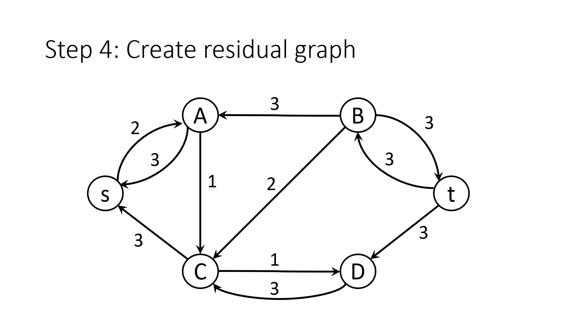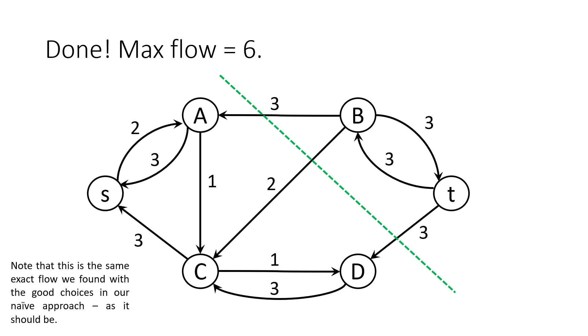And here's the same set of optimal flows that we saw before. We need to draw the residual graph, however, to ensure that we're optimal. Here the residual graph clearly demonstrates that we can't go through the AB or CB or DT edges. So we found them in cut. And here it is. Our max flow is 6.